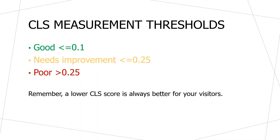CLS breaks out into three different buckets: good, needs improvement, and poor. A good CLS score is less than 0.1. A needs improvement score is somewhere between 0.1 and 0.25. And a poor CLS score is 0.25 or above. So a lower CLS score is always better for your visitors.